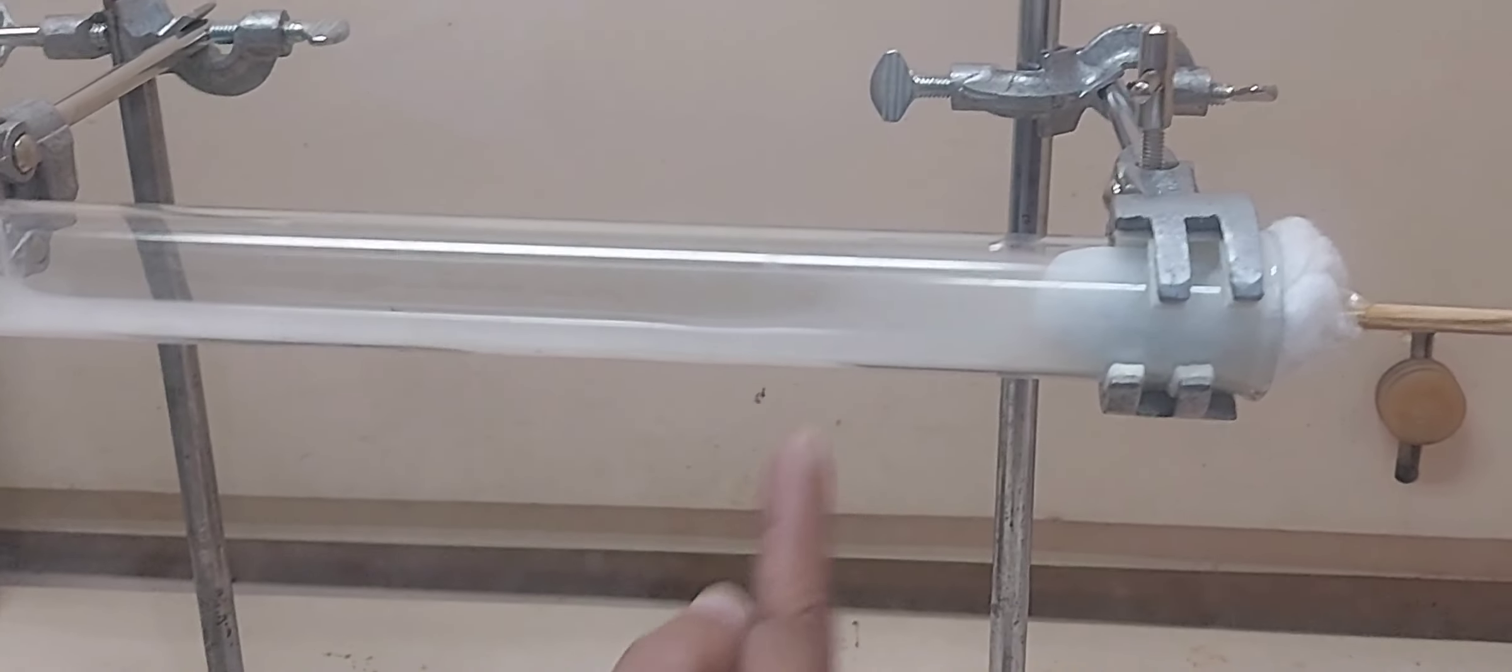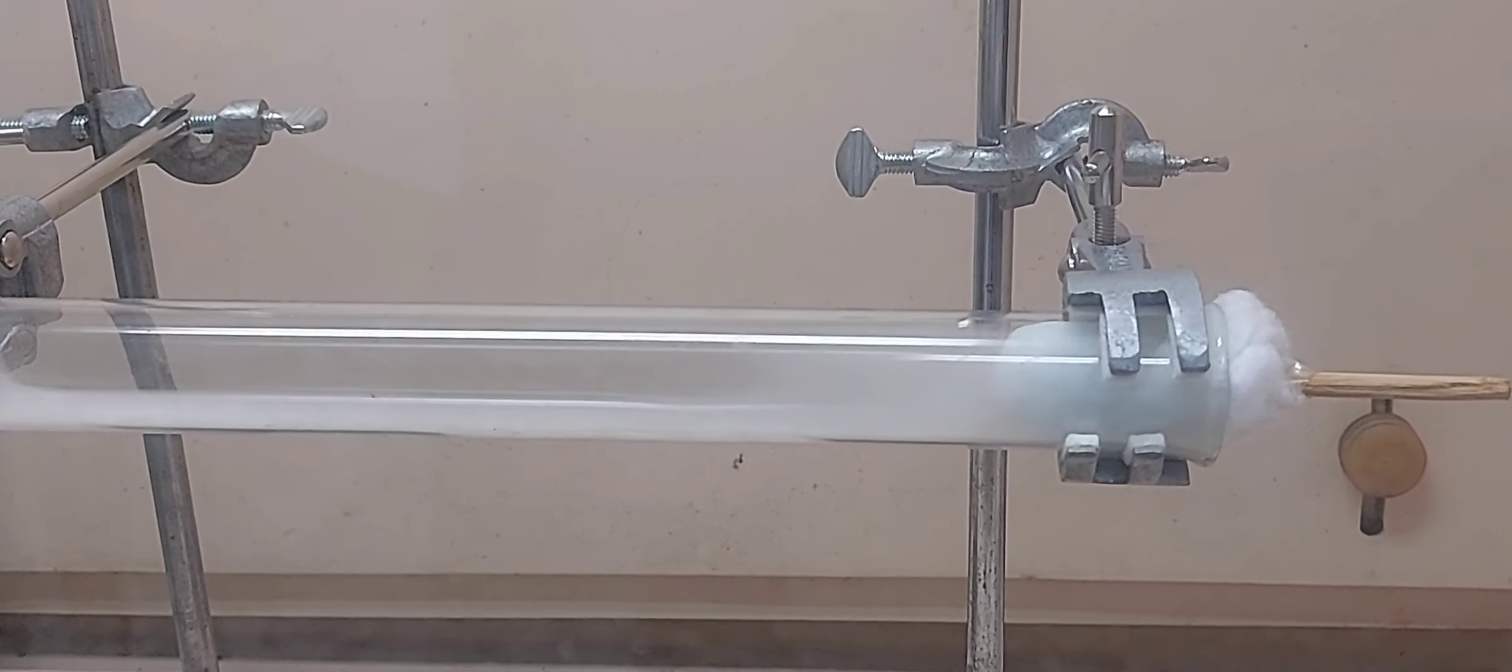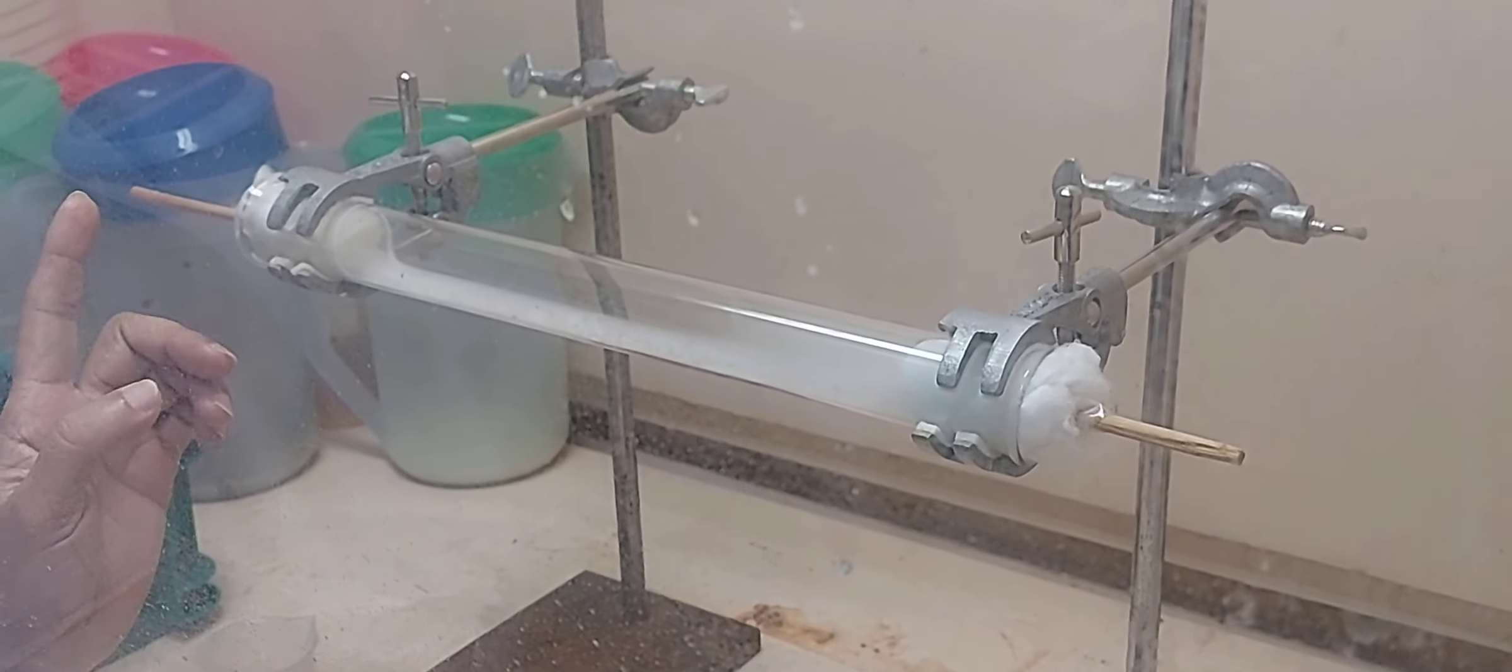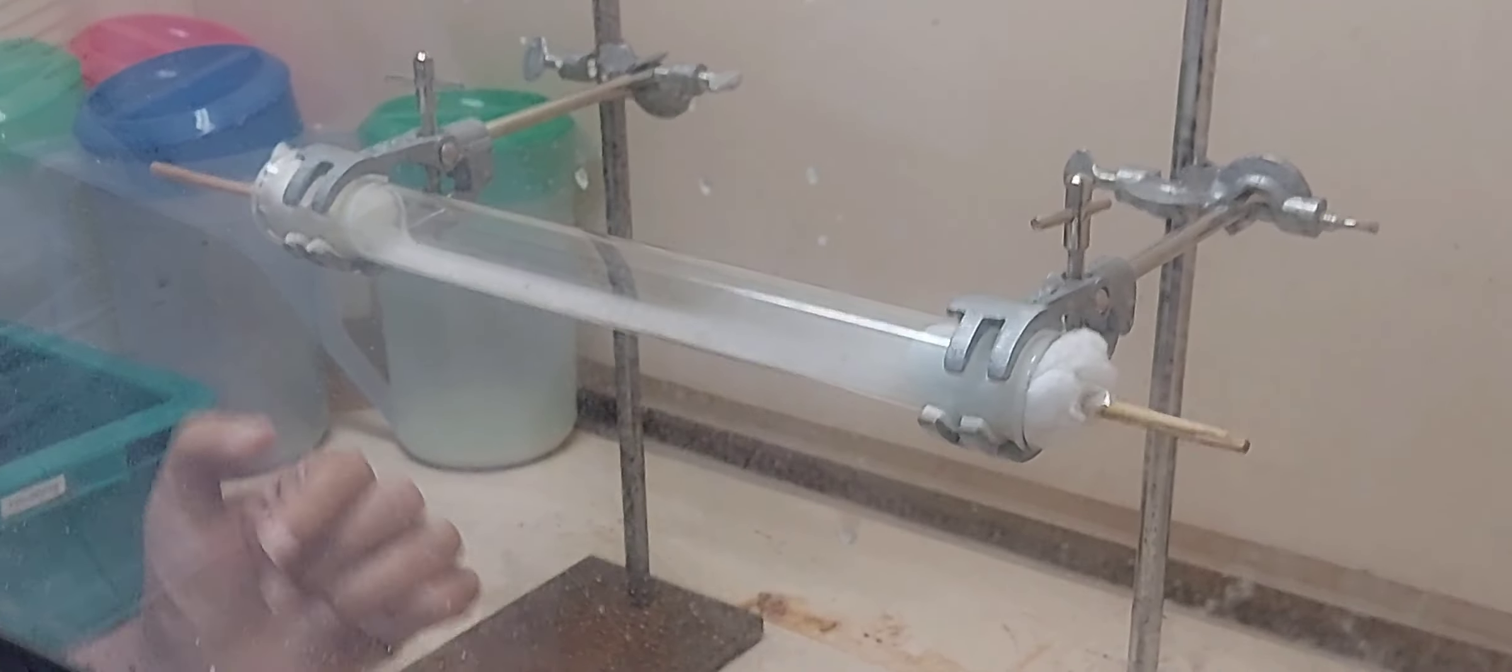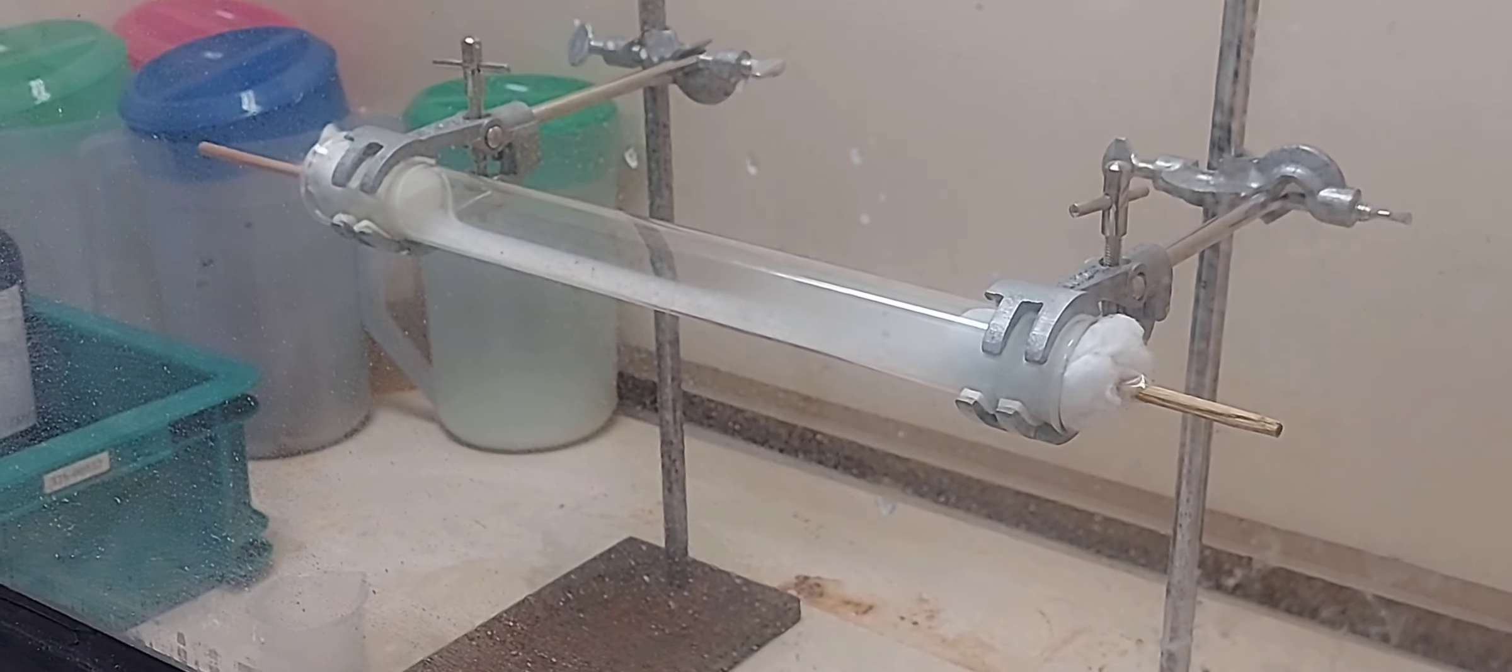And now you can see the fume here. So what has happened? HCl was traveling faster or the fumes of HCl was moving and when it has reached the fumes of ammonia, a new white compound is being formed called ammonium chloride.